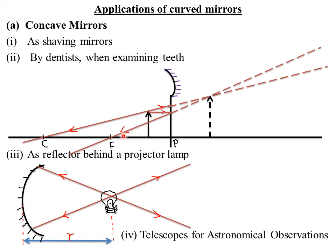Remember, we said that when the object is placed between F and P, this is the expected image. The concave mirror is placed so that the object — like the tooth being viewed by the dentist — is placed between the pole and the principal focus, so the image produced is magnified. When the dentist sees a magnified tooth, they can see very fine parts that may have a defect.